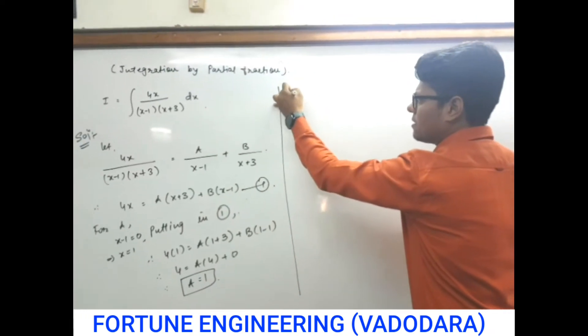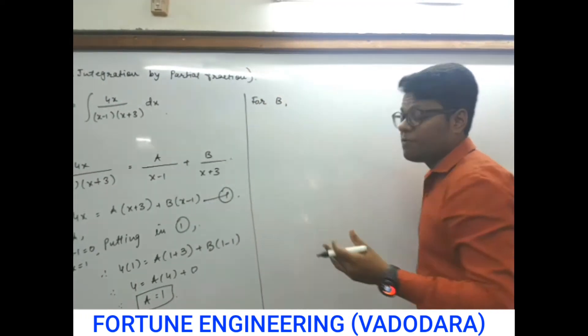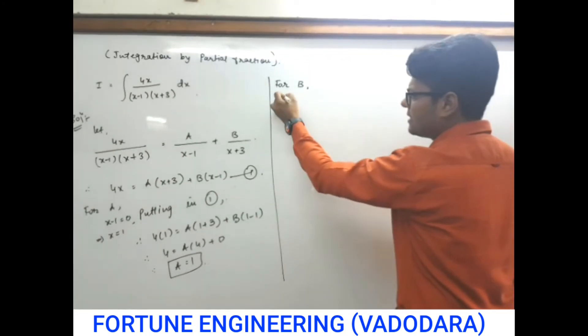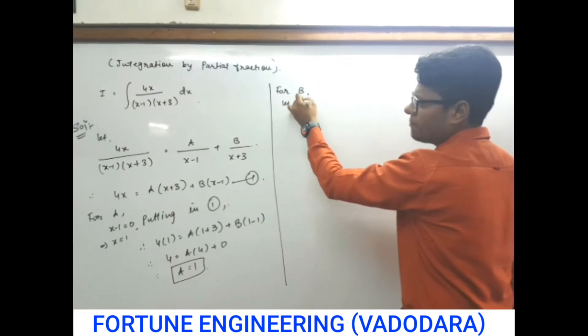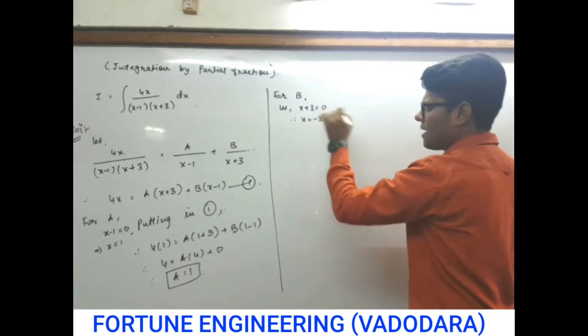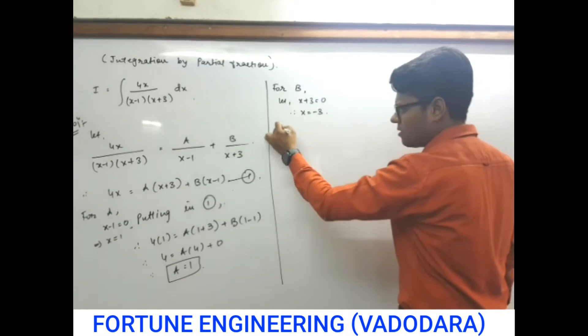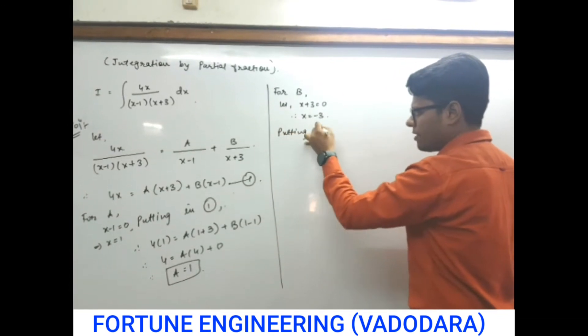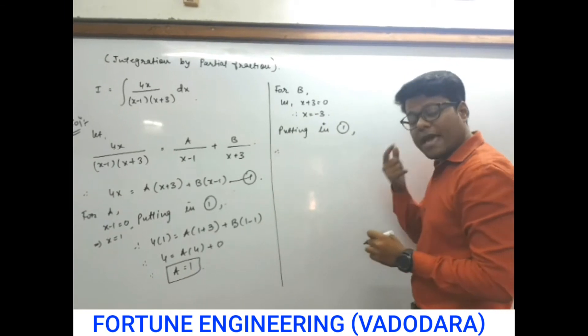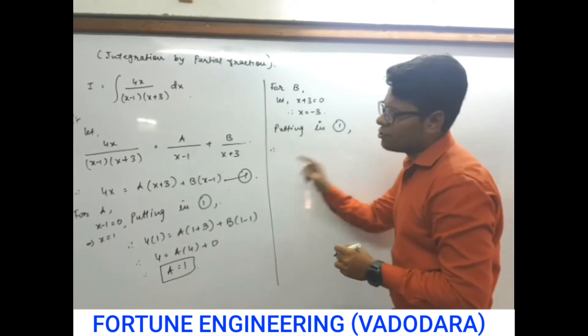Similarly, for finding b. If you want to find b, then again, repeat the same procedure. The procedure is, let x plus 3 as 0. So x is equal to minus 3. Again, putting in 1.